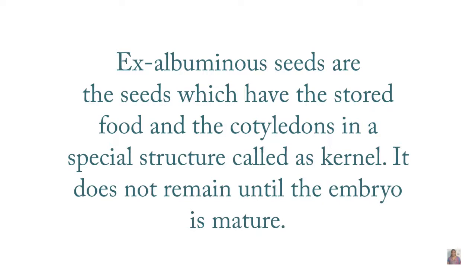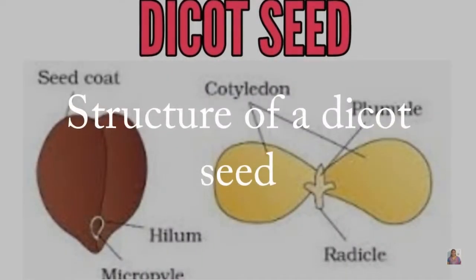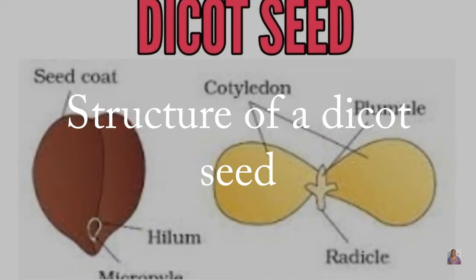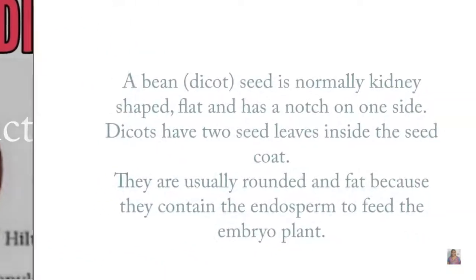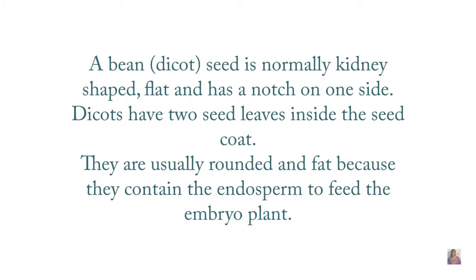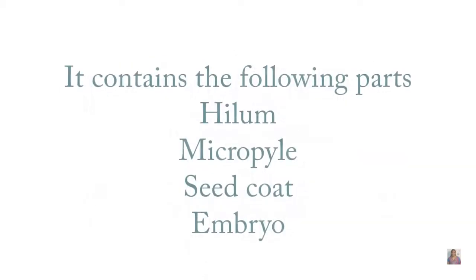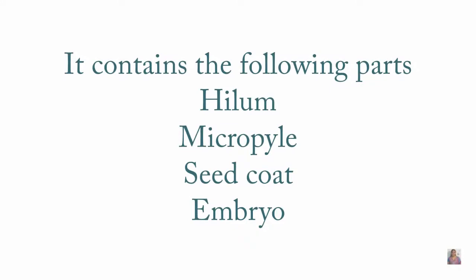Let us discuss in detail about the structure of a dicot seed. The dicot seed is normally kidney-shaped, flat, and has a notch on one side. Dicots have two cotyledons inside the seed coat. They are usually rounded and fat because they contain the endosperm to feed the embryo of the plant.